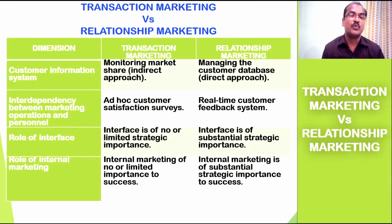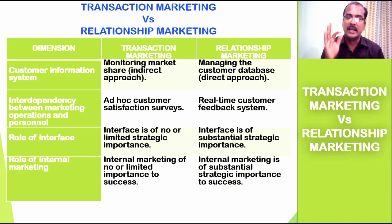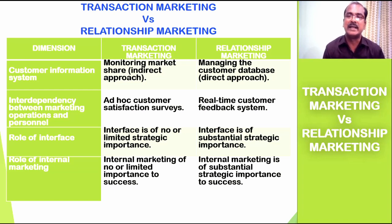The fifth dimension is customer information system. In transaction marketing, monitoring market share is the indirect approach — if market share for a product is high, the product has been well accepted by customers. Whereas in relationship marketing, managing the customer database is key: every aspect of the customer — age, income group, purchase frequency, purchase timing, product usage comforts, date of birth, marriage anniversary, and more — are all recorded.